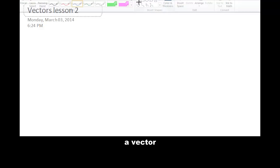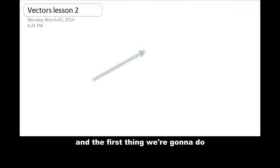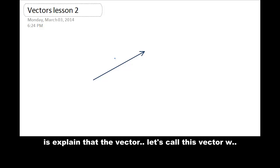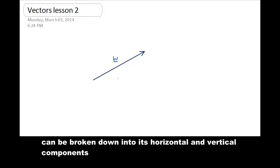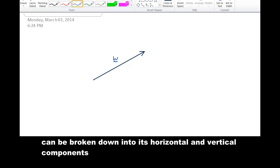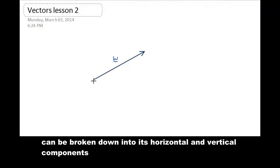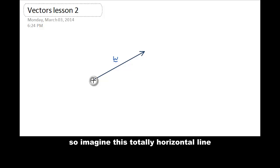So I'm going to draw a vector. And the first thing we're going to do is explain that a vector, so let's call this vector w, can be broken down into its horizontal and vertical components. So imagine this totally horizontal line that I'm drawing. Horizontal meaning it's along the x-axis. And I'm going to draw a vertical line along the y-axis, a vertical vector.